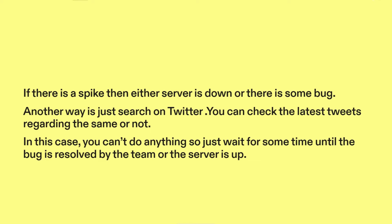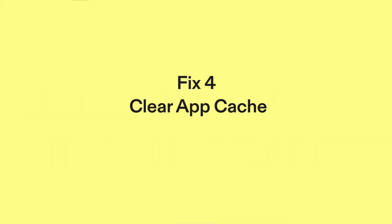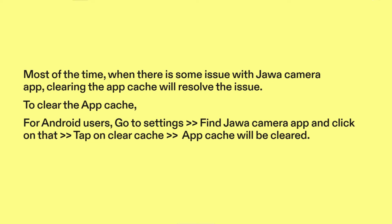In this case, you can't do anything, so just wait for some time until the bug is resolved by the team or the server is up. Fix four: clear app cache. Most of the time, when there is some issue with Jawa camera app, clearing the app cache will resolve the issue.